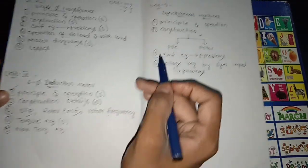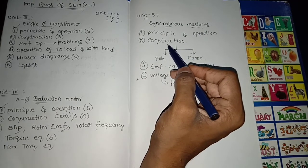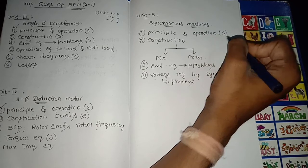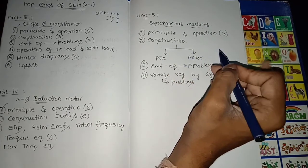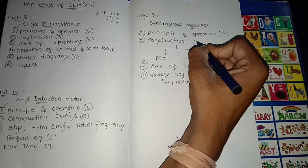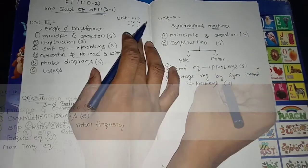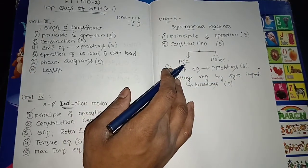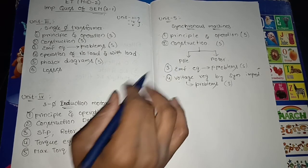In Unit 5 synchronous machines, for the semester examination we can go through principle and operation, construction including salient pole and round rotor, EMF equation, and voltage regulation. These are the most important topics. Please subscribe to my channel for more updated videos. Thank you friends for watching this video.